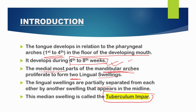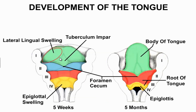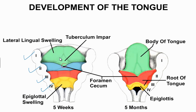The medial-most part of the mandibular arches proliferates to form two lingual swellings. These lingual swellings are separated by another midline swelling known as the tubercular impar. These are the lingual swellings separated by the midline swelling. This is the first pharyngeal arch, second, third, fourth pharyngeal arches. This point in the midline is called the foramen cecum, whose purpose we will discuss in the next slides.